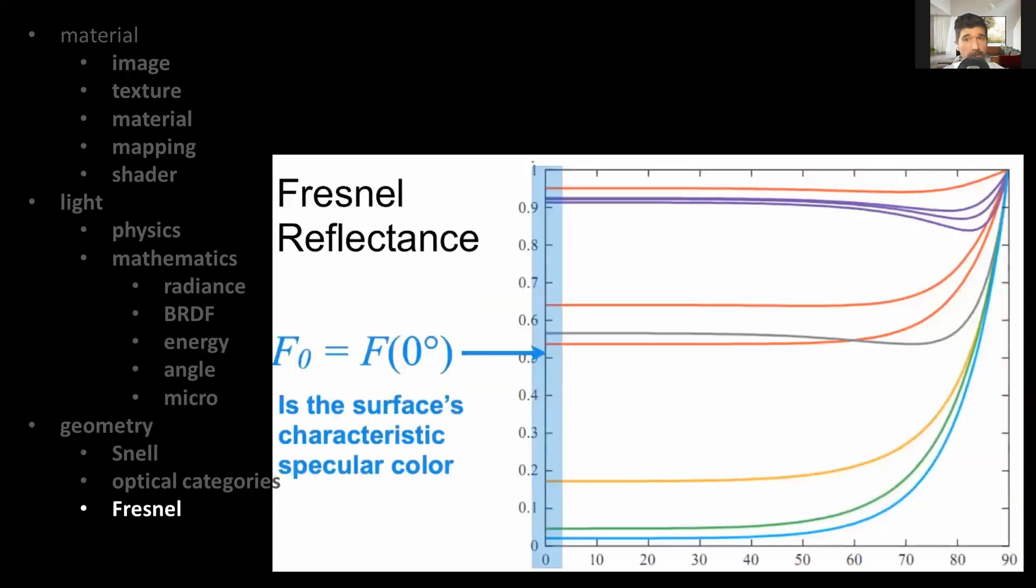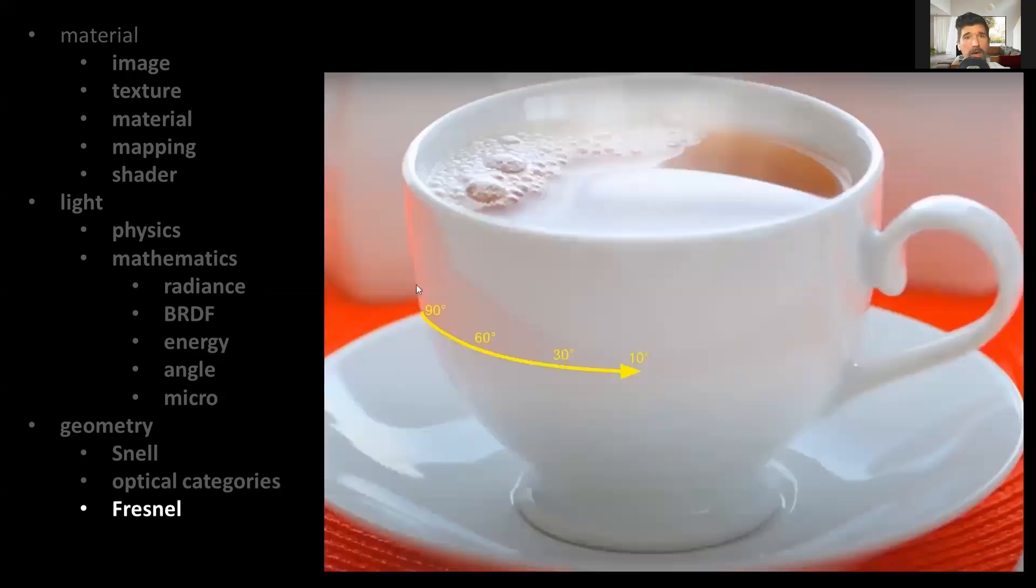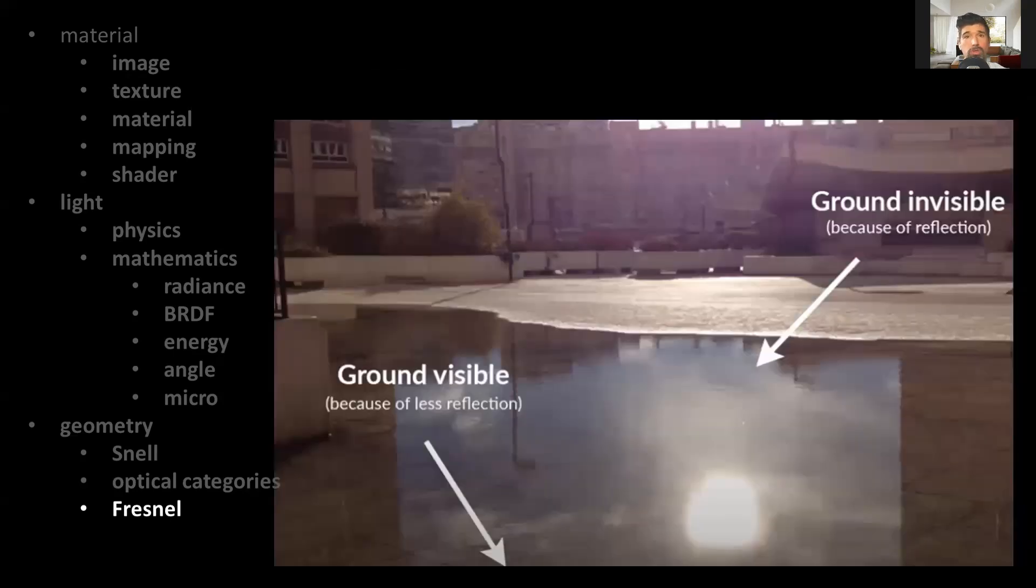Now, the base reflectance is what's called the surface's characteristic specular color as well, which can be seen in this coffee cup, where if we look directly into the cup, we have a certain amount of reflection, which increases as the angle of incidence increases. We can observe this phenomenon all around us, where water is the most prominent example, showing what is underneath the surface of the pond when the angle of incidence is small and reflecting what is above when the angle is larger.